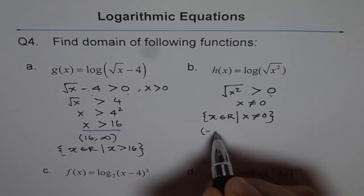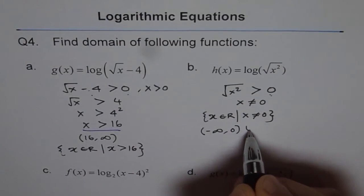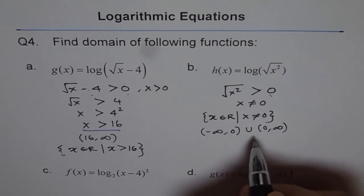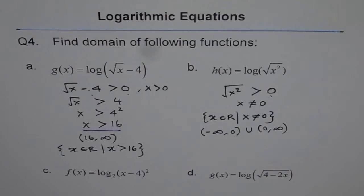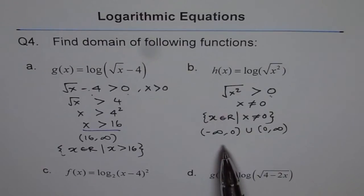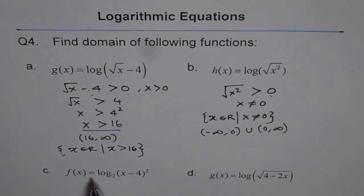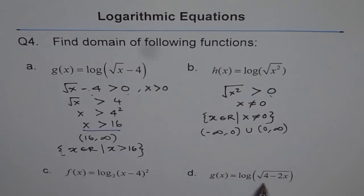In interval notation, however, you can write this as (−∞, 0) union (0, ∞), not including 0. Now it is up to you to do these two practice questions. See: f of x equals log base 2 of (x minus 4) whole square, and g of x equals log of square root of (4 minus 2x). They are kind of similar but different, and their answers may vary. Try to solve them, and then we move on with solving logarithmic equations. All the best. Thank you.